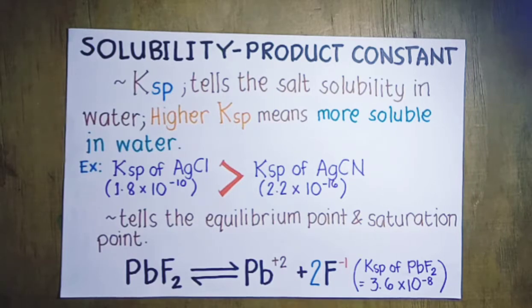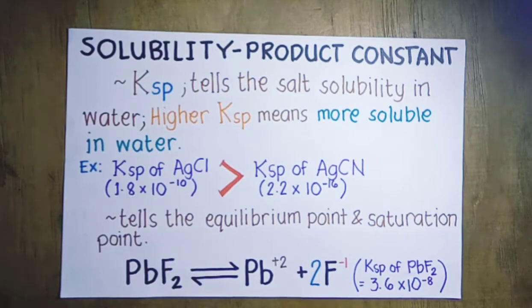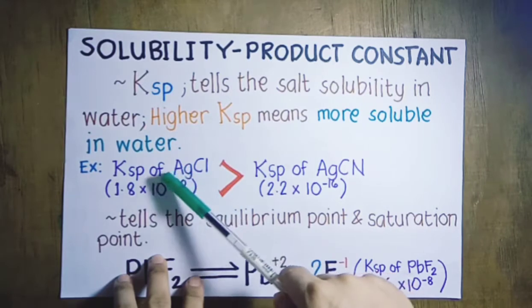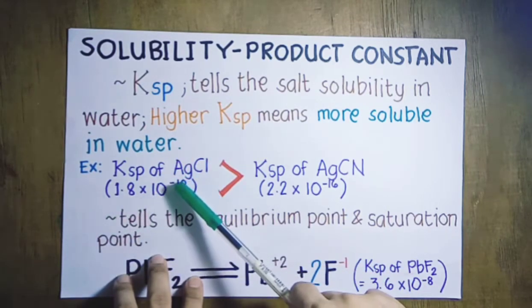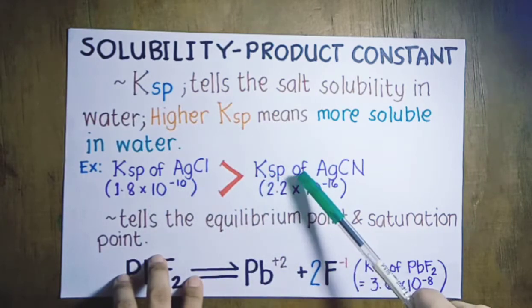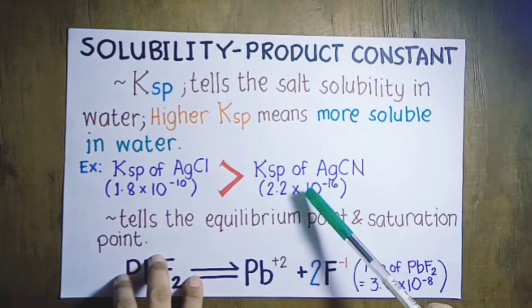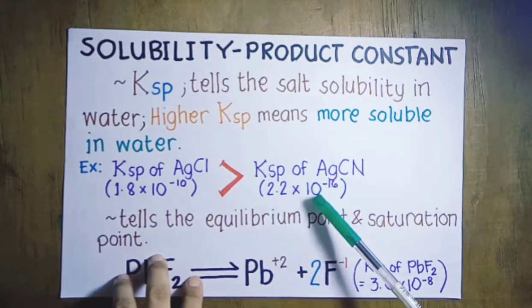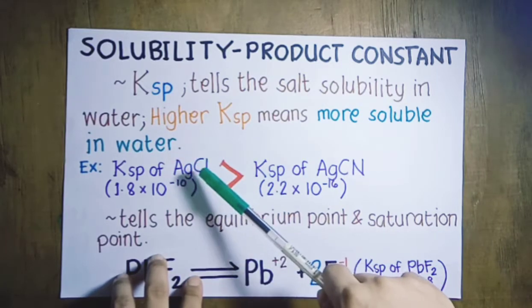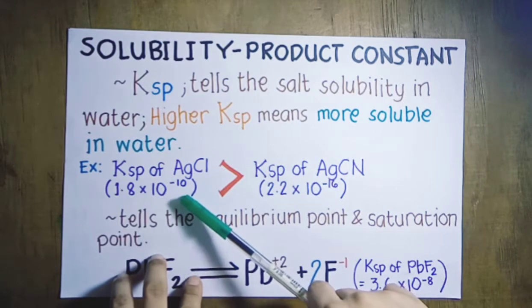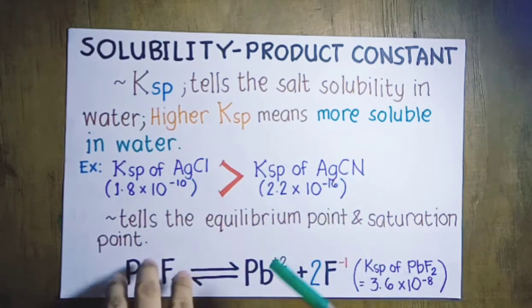The solubility product constant also tells us the salt solubility, or the solubility of any ionic compound in water. A higher Ksp means more soluble in water. Take note that each ionic compound has its own Ksp. For example, silver chloride has a Ksp of 1.8 × 10⁻¹⁰, and silver cyanide has a Ksp of 2.2 × 10⁻¹⁶, so silver chloride is more soluble in water than silver cyanide since it has a higher Ksp.